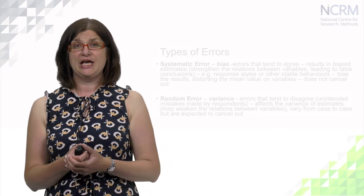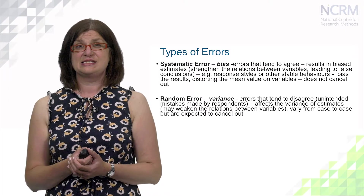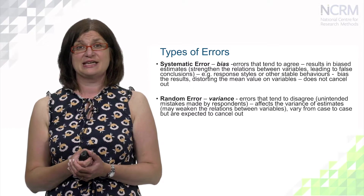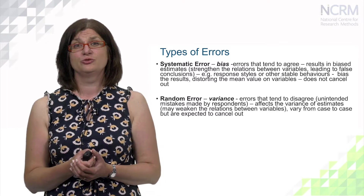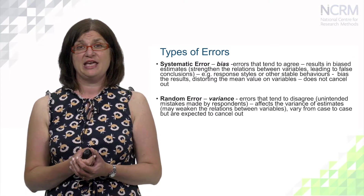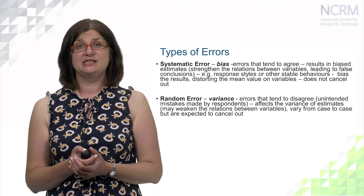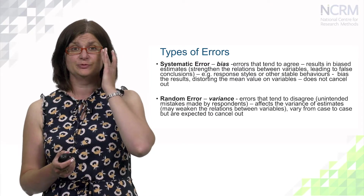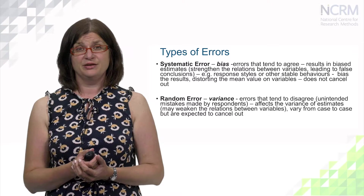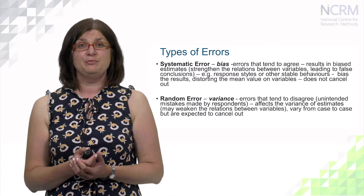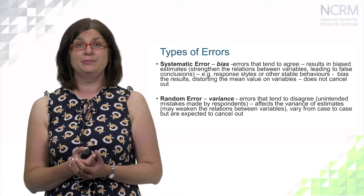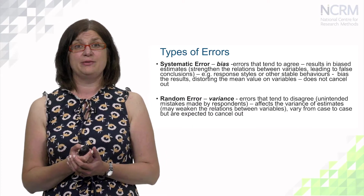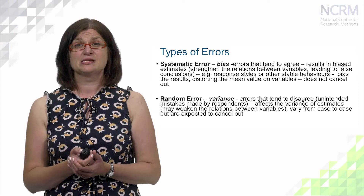Errors can be systematic or random. Systematic error, also called bias, refers to errors that tend to agree, resulting in biased estimates and strengthening relationships between variables leading to false conclusions. For example, response style behavior or other stable behaviors in respondents can bias results, distorting the mean value on variables, and bias does not cancel out. Random error, or variance, refers to errors that tend to disagree – unintended mistakes made by respondents or interviewers. They affect the variance of estimates and may weaken relationships between variables, but they are expected to cancel out.